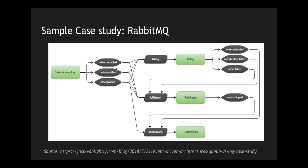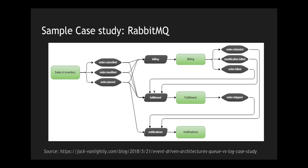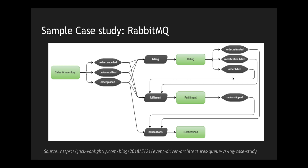Fulfillment also receives all three sales events, and order placed alone goes into the notifications queue as well. Billing then publishes three types of messages — two get pushed into the fulfillment queue and one into the notifications queue. All of this routing is handled at the broker level so that microservices can easily consume and process their messages. If your use case looks like this, definitely go for RabbitMQ.